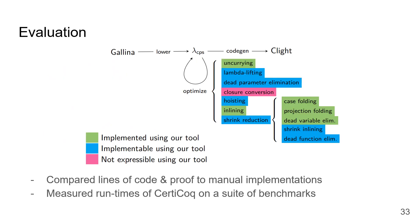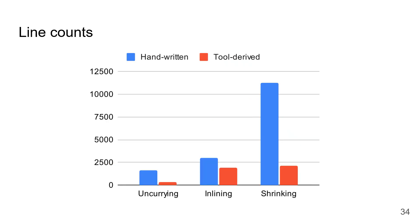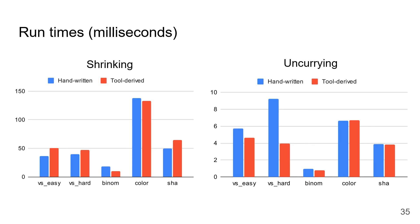To evaluate our tool, we compared the number of lines of code and proof it took to implement the transformations highlighted in green using our tool compared to doing it all by hand. Then, we measured the runtimes of some of these generated implementations on a suite of benchmarks, and once again compared to handwritten counterparts. Here are the line counts. In blue are the amount of lines of code and proof it took to do everything by hand, and in red are the amount of lines of code and proof it took using our tool. As you can see, our tool in some cases significantly reduces the amount of manual proof effort required.